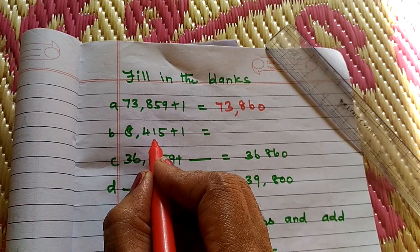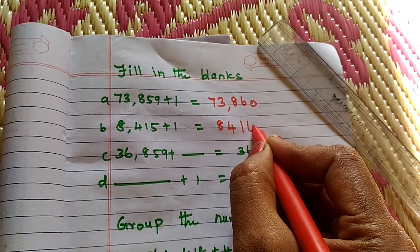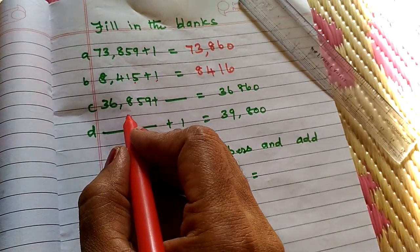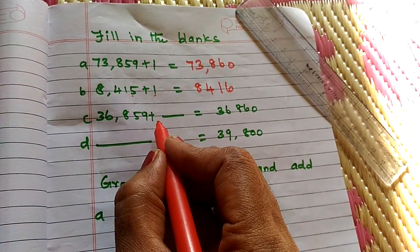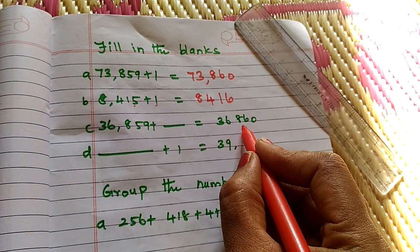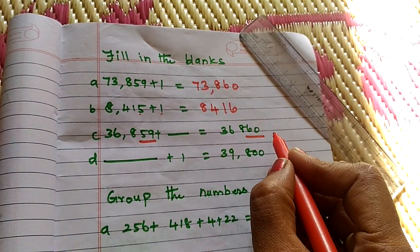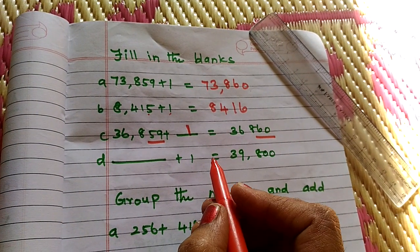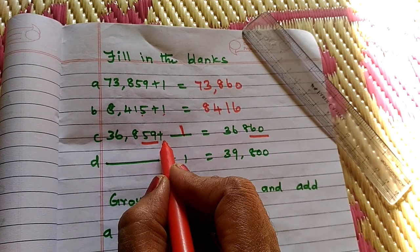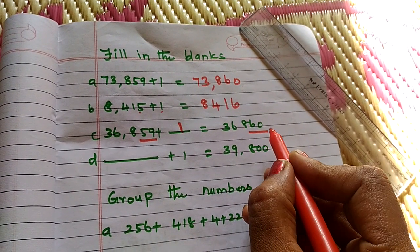8,415 plus 1 equals 8,416. You add 1 number. 16. Then, 36,859 plus dash. Answer is 36,860. 59, 860, the difference is 1. Answer is 1. 36,859 plus 1, you get answer 36,860.